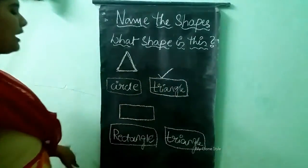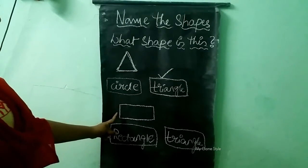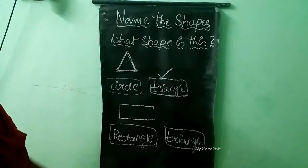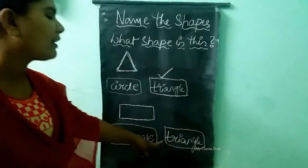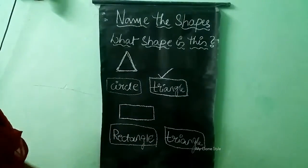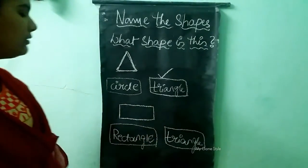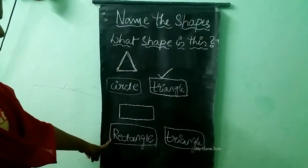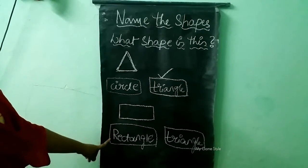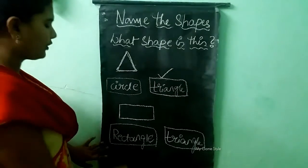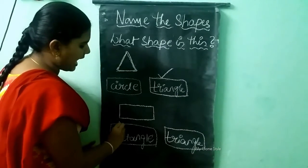And next. What shape is this, children? Rectangle or triangle? Tell me — rectangle or triangle? Rectangle. This is a rectangle shape. So we need to tick rectangle.